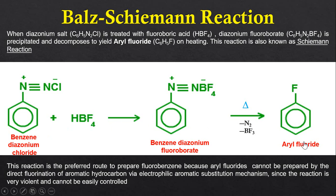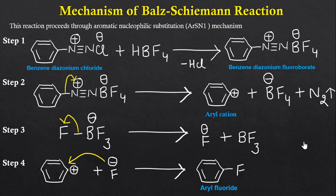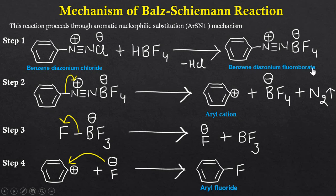Now let's look at the mechanism of how benzene diazonium chloride is converted to aryl fluoride. This reaction proceeds through an aromatic nucleophilic substitution mechanism. In step 1, benzene diazonium chloride reacts with HBF4 (fluoroboric acid). There is a positive charge on nitrogen and a negative charge on chloride, while HBF4 has a positive charge on hydrogen and negative charge on boron. The H⁺ and Cl⁻ combine and HCl is removed, yielding benzene diazonium fluoroborate.